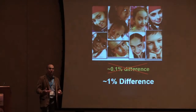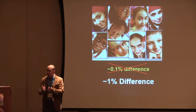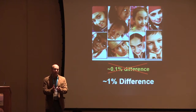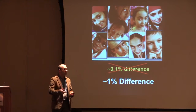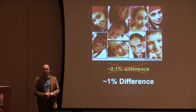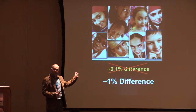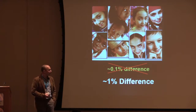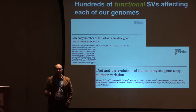These large structural variants affect a huge amount of base pairs. When you compare two human genomes and include all insertions, deletions, and inversions, the difference is not 0.1% but closer to 1%. We are very excited about this because we think it may actually explain some of the missing heritability that people have been talking about.